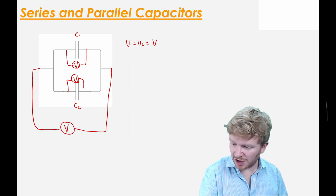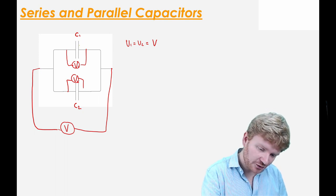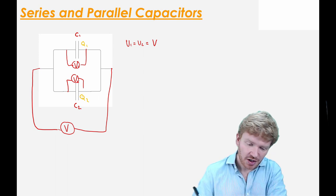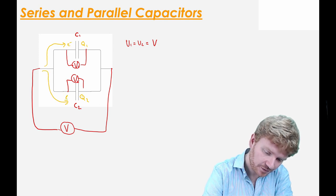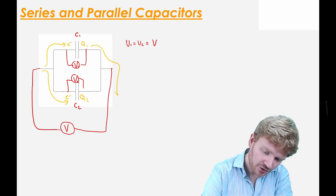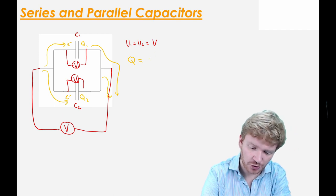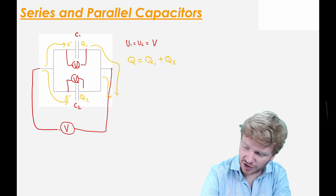Let's think about the charge on these two. I'm going to have a charge of Q1 on the first and Q2 on the second. What can I say about the total charge? Think about the individual electrons — electrons will flow in on one side and flow out on the other. So the total charge Q is equal to the charge on the first plus the charge on the second.